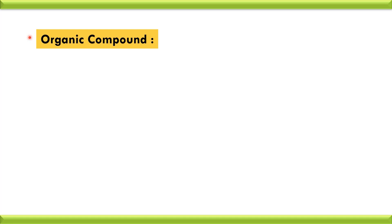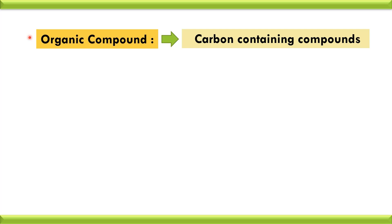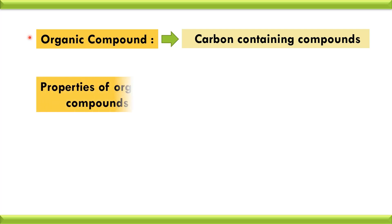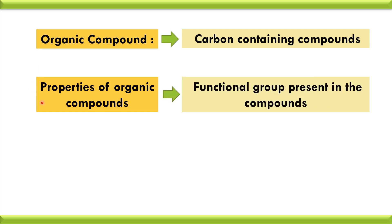We all know that carbon-containing compounds are known as organic compounds. The properties of organic compounds depend upon the functional groups present in the compound. A functional group is an atom or group of atoms present within the molecule which represents the properties of organic compounds. That group is known as a functional group.